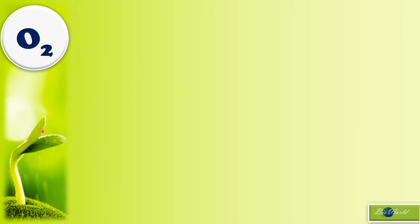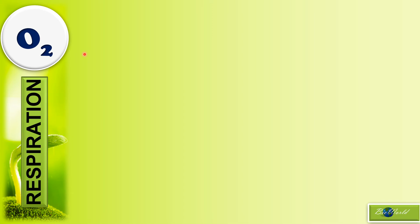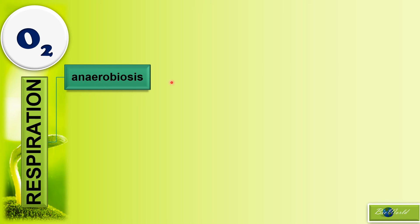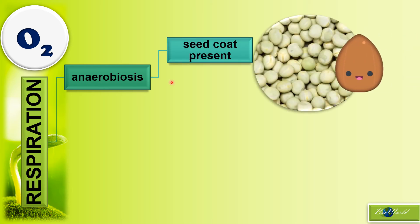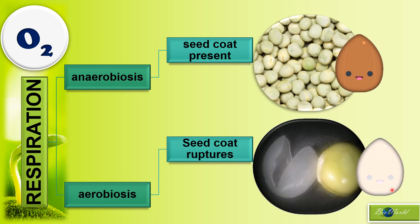Oxygen is related to respiration. In the initial stages of seed germination, the seed actually does anaerobic respiration — anaerobiosis — because the seed coat is still present and impermeable, so oxygen cannot diffuse in. But due to imbibition the seed coat ruptures, and once it does, oxygen can diffuse in and the cells carry out aerobic respiration — aerobiosis. So oxygen is not required in the initial stages of germination, but is required in the later stages.